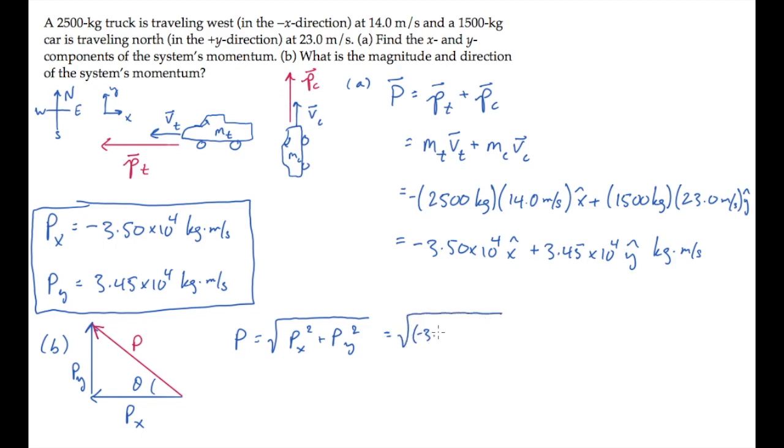When you substitute numbers, factoring out the times 10 to the 4th and the units, you find that the system's momentum has a magnitude of 4.91 times 10 to the 4th, kilogram meter per second.